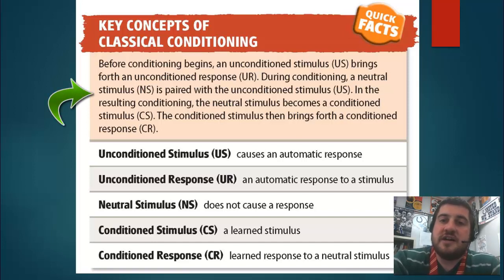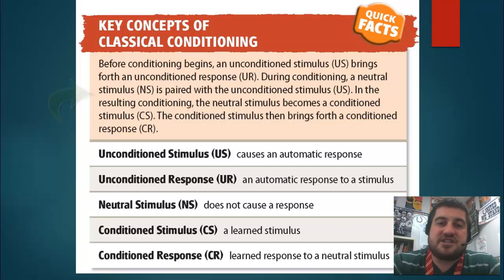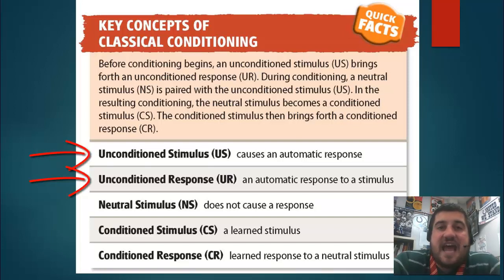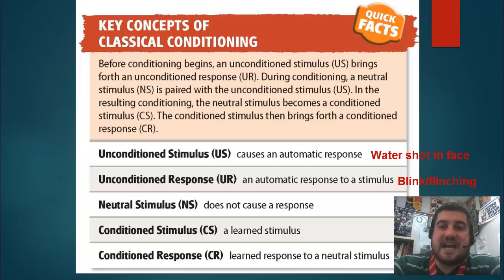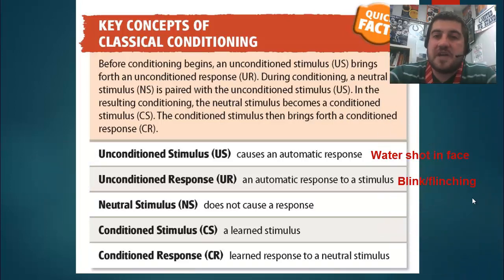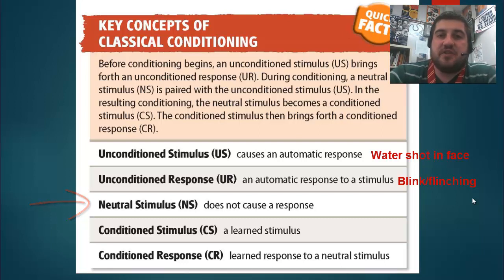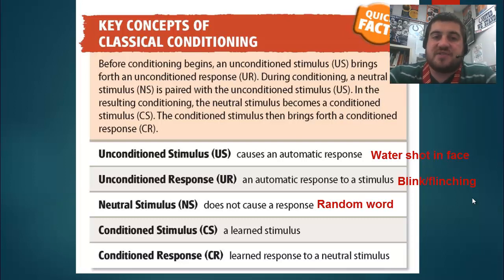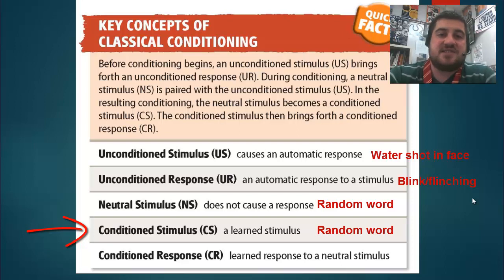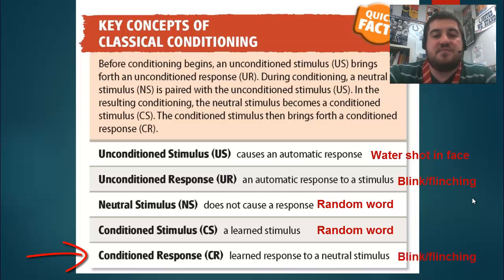Before conditioning begins, an unconditioned stimulus brings forth an unconditioned response. 'Unconditioned' means it does not have to be learned — if you get sprayed in the face with water, you're going to blink and flinch to protect your eyes. During conditioning, we pair a neutral stimulus with an unconditioned stimulus; for example, the water would be the unconditioned stimulus and a certain word that is said would be the neutral stimulus. After conditioning, the neutral stimulus becomes a conditioned stimulus — in this case, the word would cause the flinch — and the conditioned stimulus brings forth a conditioned response. You'll get to see this in our experiment.